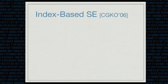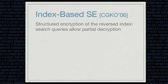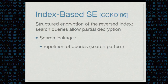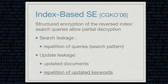One idea proposed ten years ago at CCS by Curtmola-Garay was to develop index-based searchable encryption schemes. The idea is to have a structured encryption of the reversed index. To perform a search, the client sends a trapdoor that allows the server to partially decrypt this structured encryption of the reversed index. What's really interesting is that it's efficient, but it does leak some information — for example, the repetition of queries, called the search pattern. If you consider dynamic databases, when you do updates, it might leak the indices of updated documents or the repetition of updated keywords. This is the repetition not only among update queries but among all queries, even search queries — keep that in mind because this is a really important point.